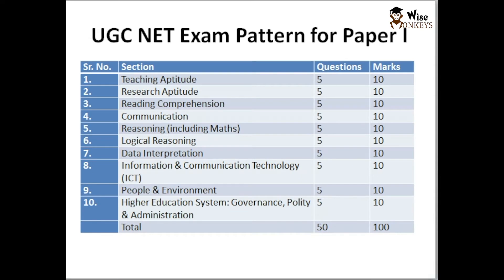So let us understand what Paper 1 comprises of. In Paper 1, there will be a total of 10 sections. In each section there will be 5 questions, and each question carries 2 marks, so in total we have to attempt 50 questions. Let us understand which are those 10 sections. Section 1 is Teaching Aptitude.